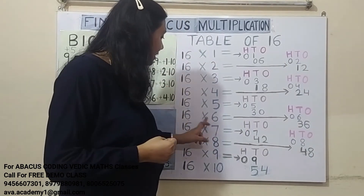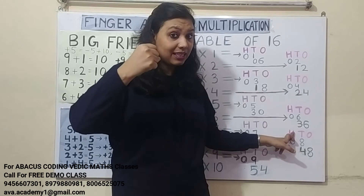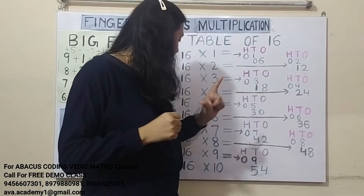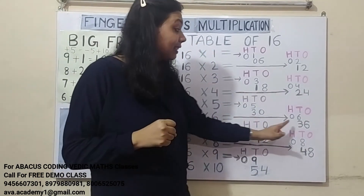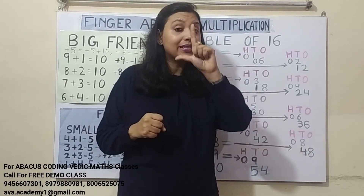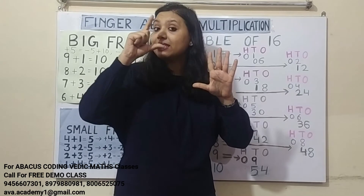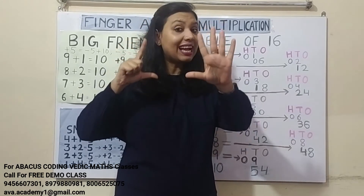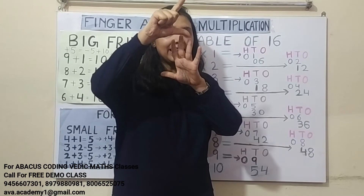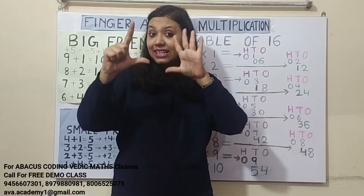16 sixes are: 1 sixes are 6 — in 100's we represent 0, and in 10's we represent 6. Now, 6 sixes are 36 — in 10's we represent 3, and in 1's we represent 6. The answer is 96.